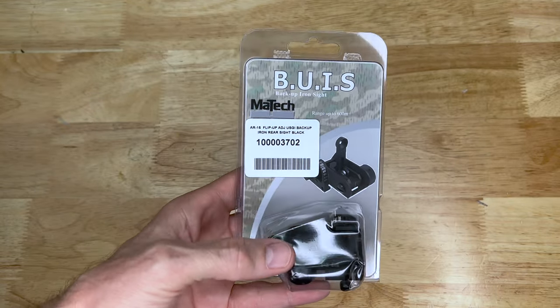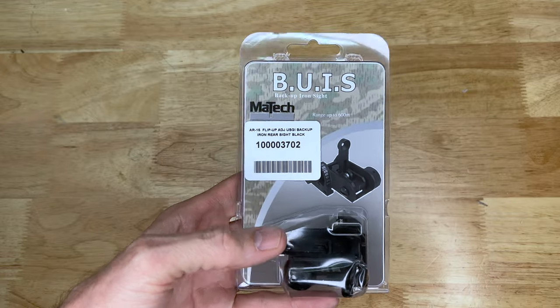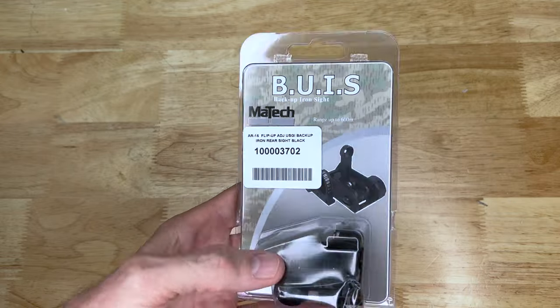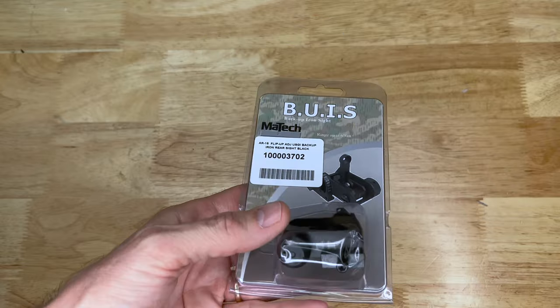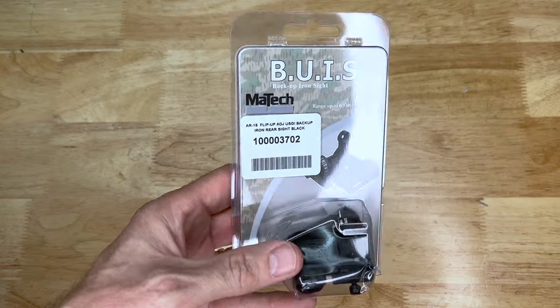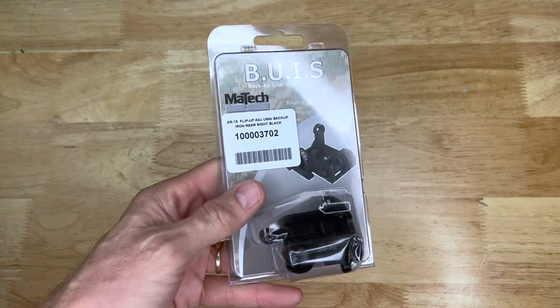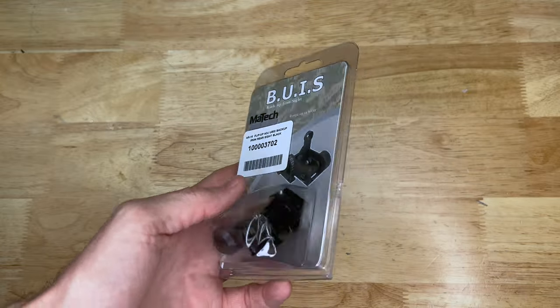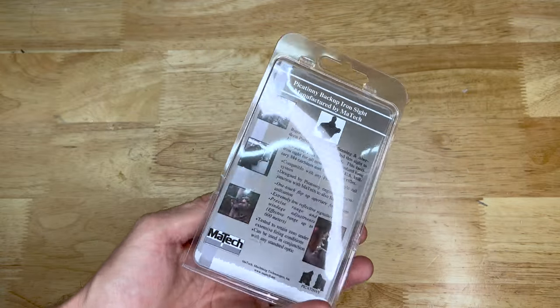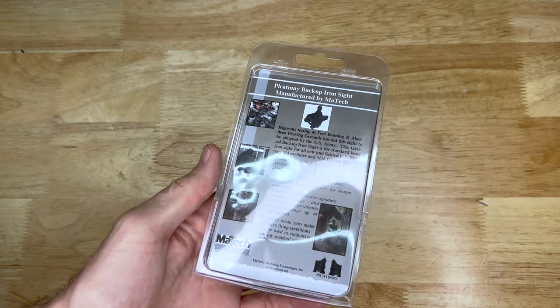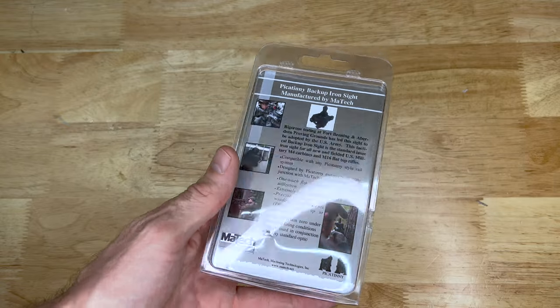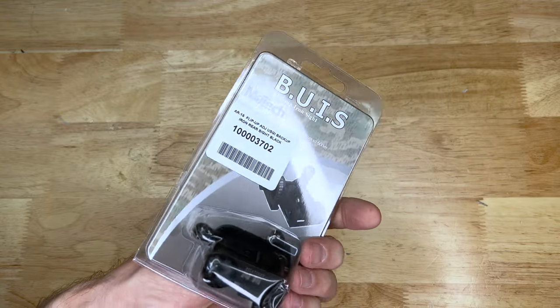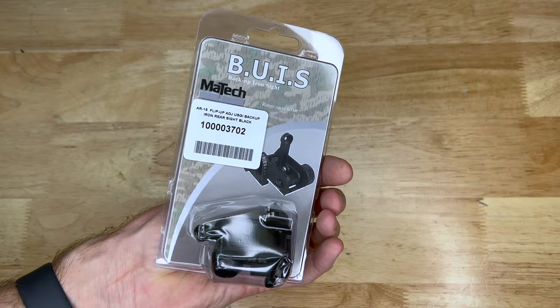There's also the Knight's Armament backup sight, but that thing is about three times the cost of this one and they're a little bit hard to track down. This one here was readily available over at Brownells. If you're looking for stuff like this and other items for your firearm projects, definitely check them out. Head over to my website and use my affiliate link. Channel definitely gets a kickback from that small percentage and it's much appreciated.